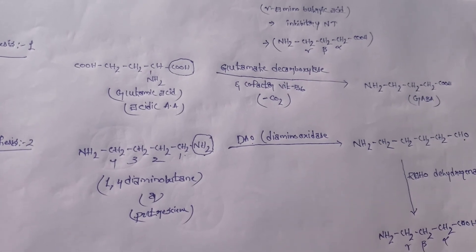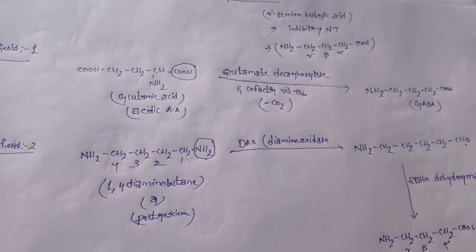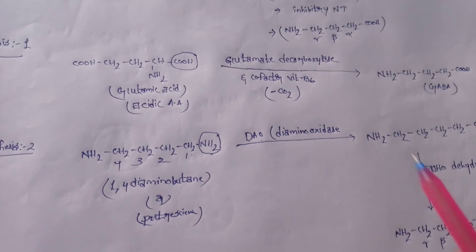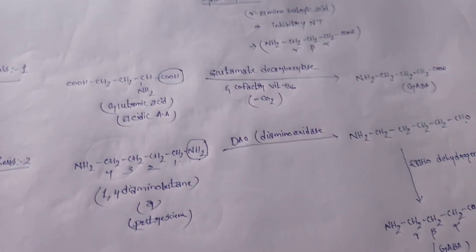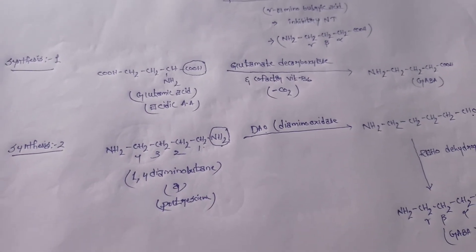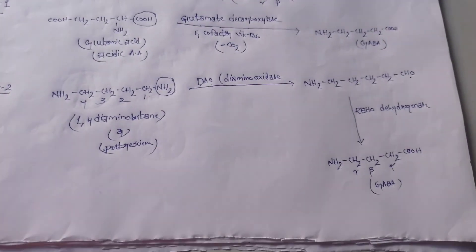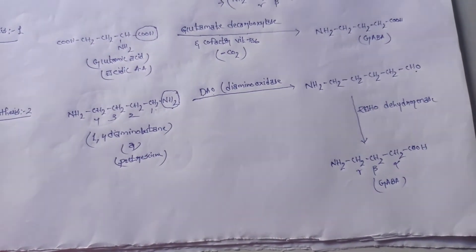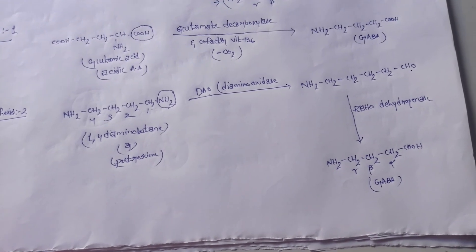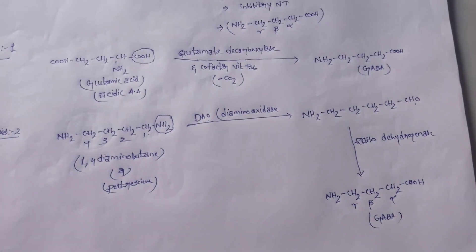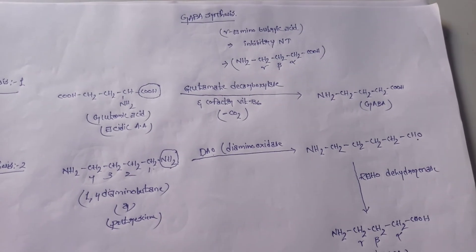This is about GABA synthesis. In step one, it is produced from glutamic acid. In step two, it is produced from one comma four diaminobutane, also called putrescine.